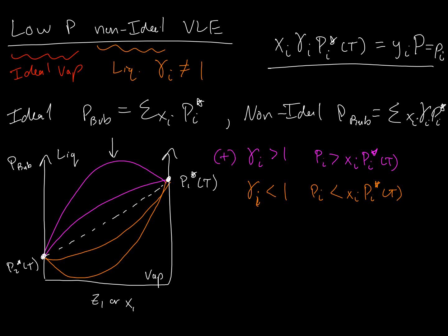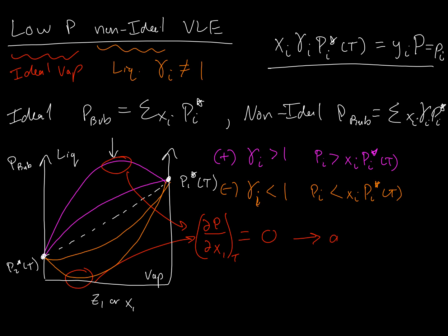We call these positive deviation and negative deviation from Raoult's Law behavior. At the maximum or minimum in a P-X-Y diagram — and the same logic holds for a T-X-Y diagram — where the change in pressure as a function of change in composition at constant temperature equals zero, we have an azeotrope.